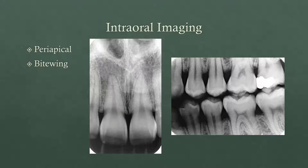You especially want to look at the apical region, because that's where you're going to see possible periapical radiolucencies. So if you see some dark area there, some radiolucency, that's a good sign that that tooth could be necrotic. And these images, if taken right, you can also see caries that'll start to develop just underneath the contact area of teeth.